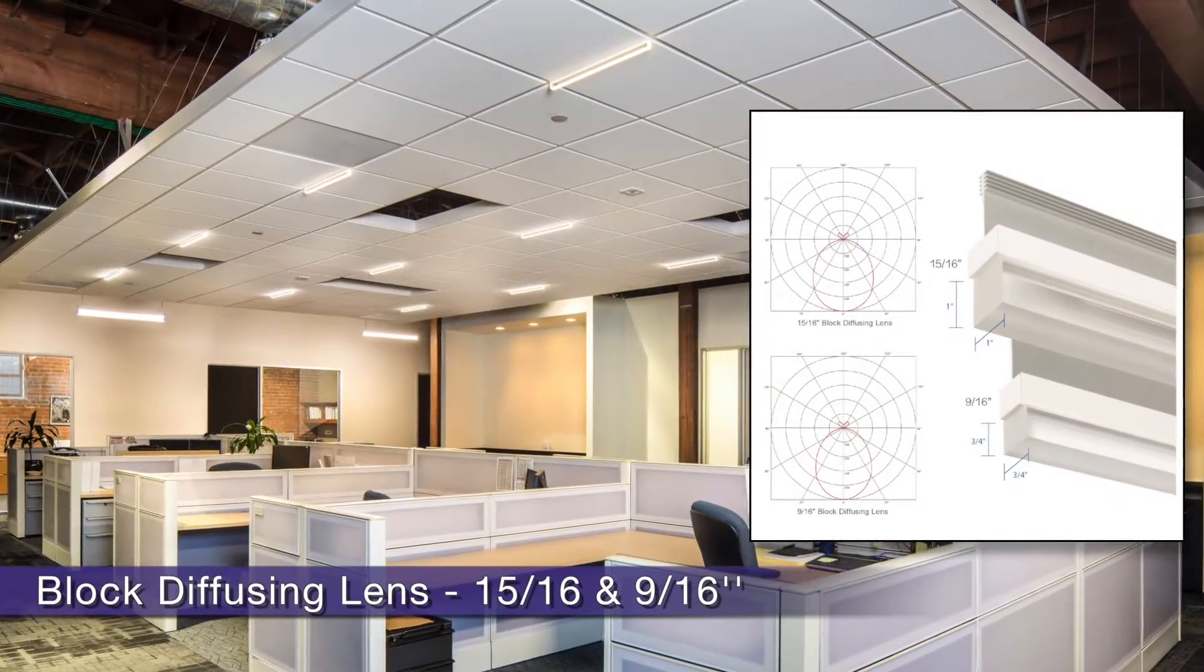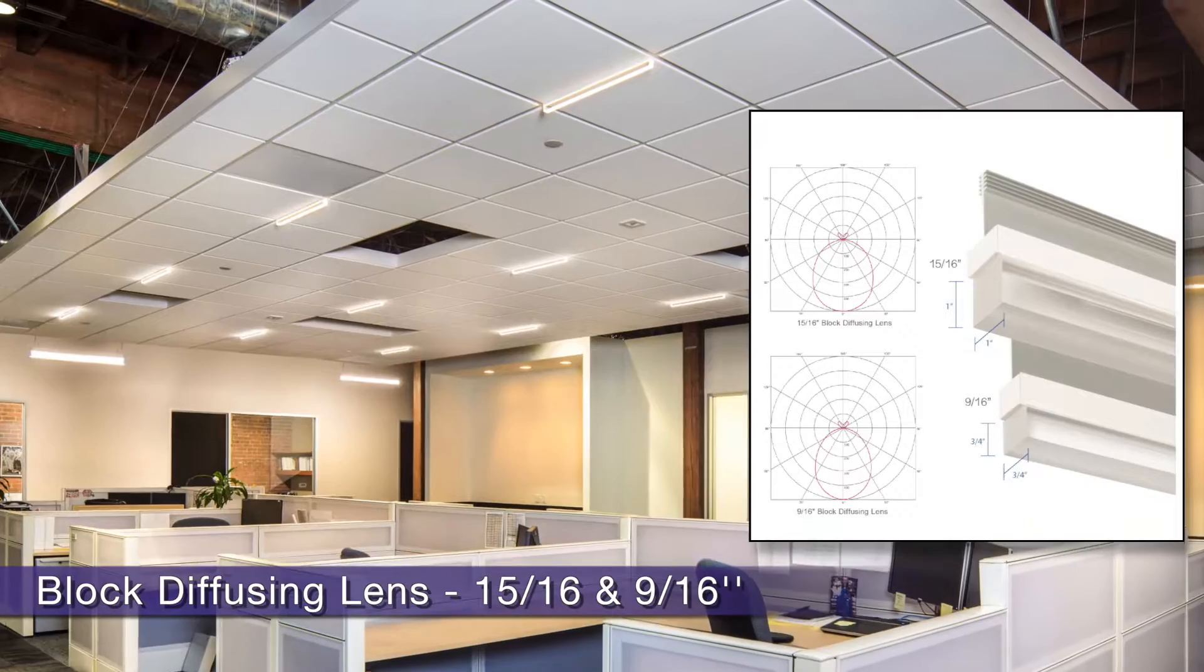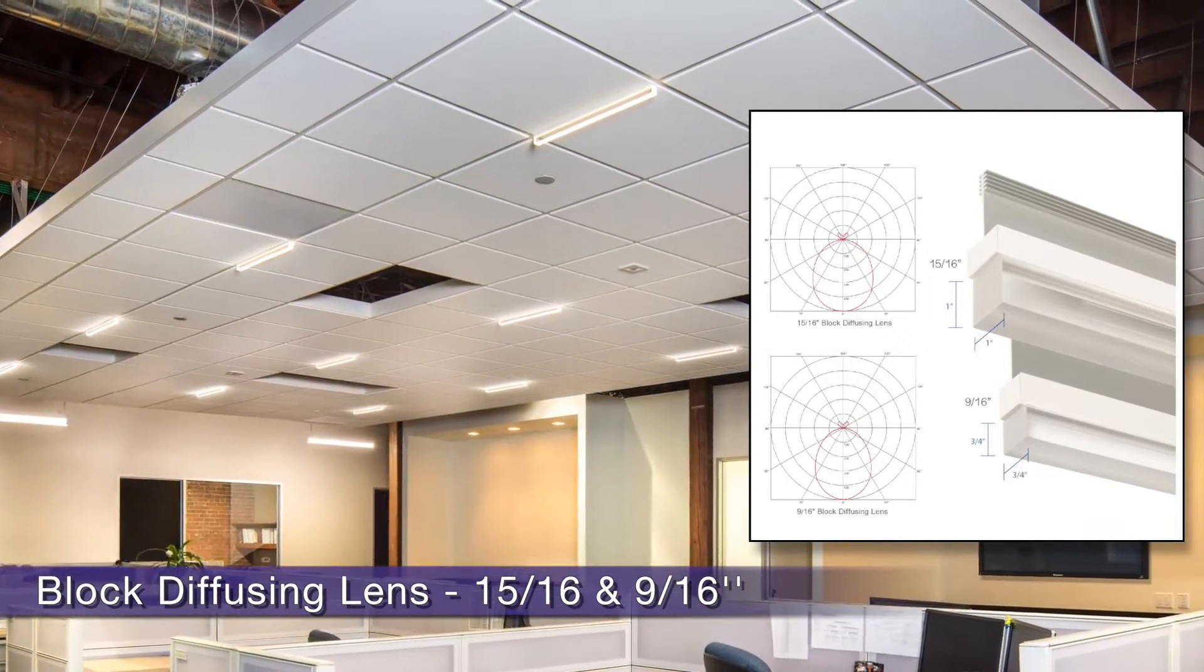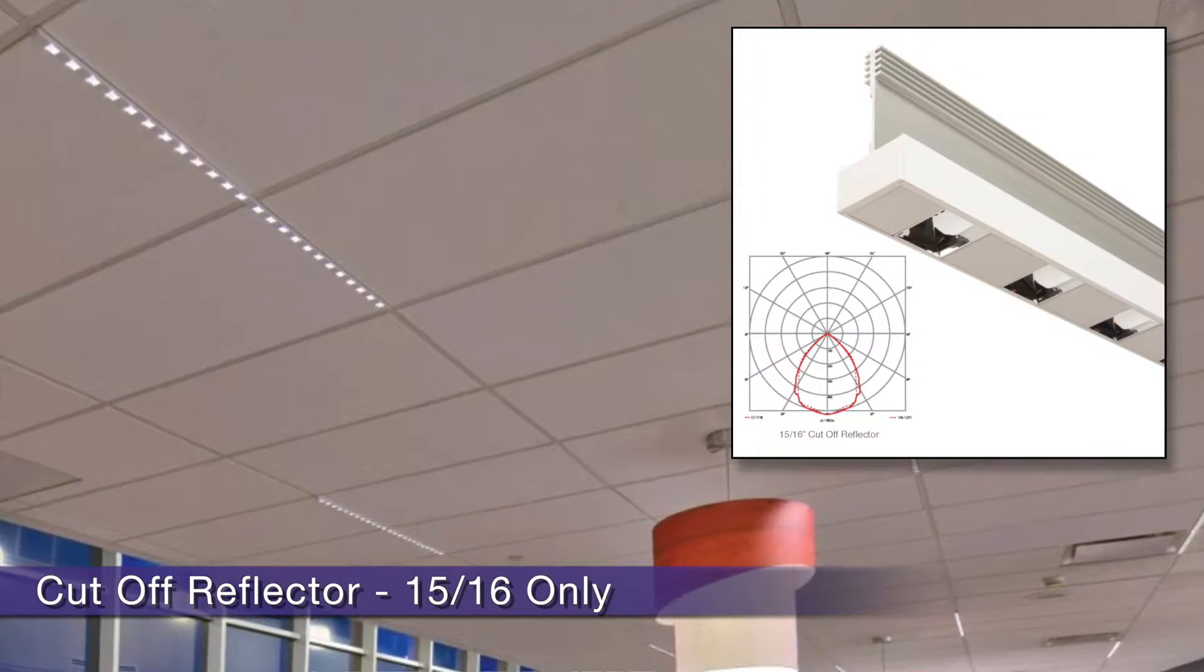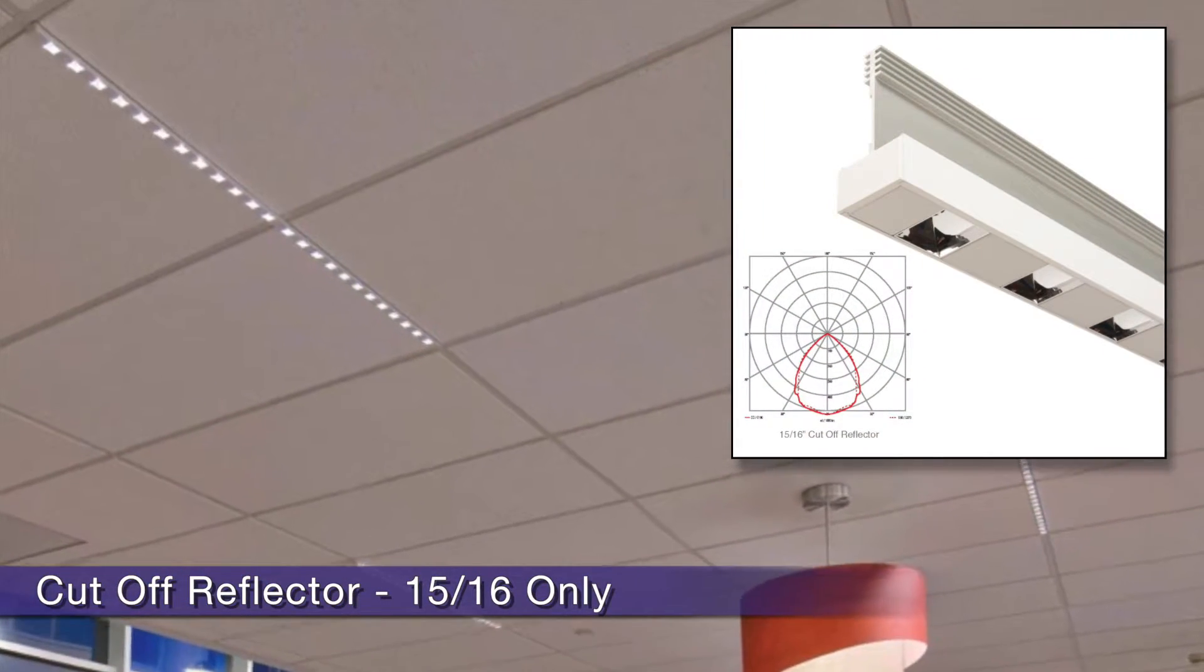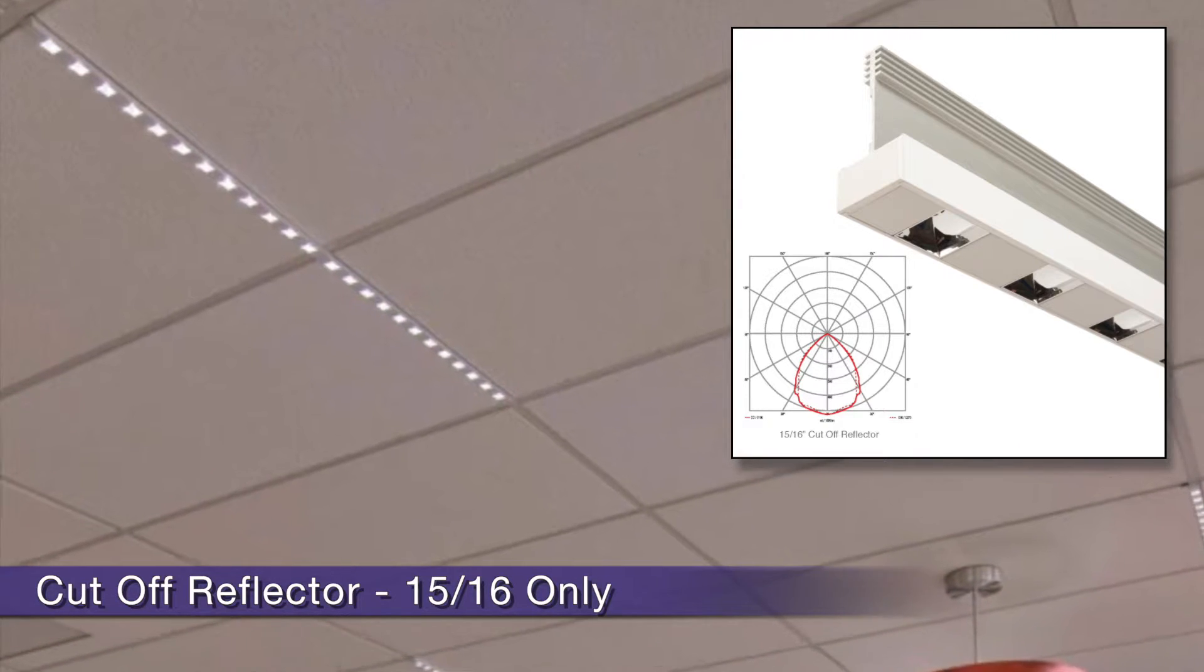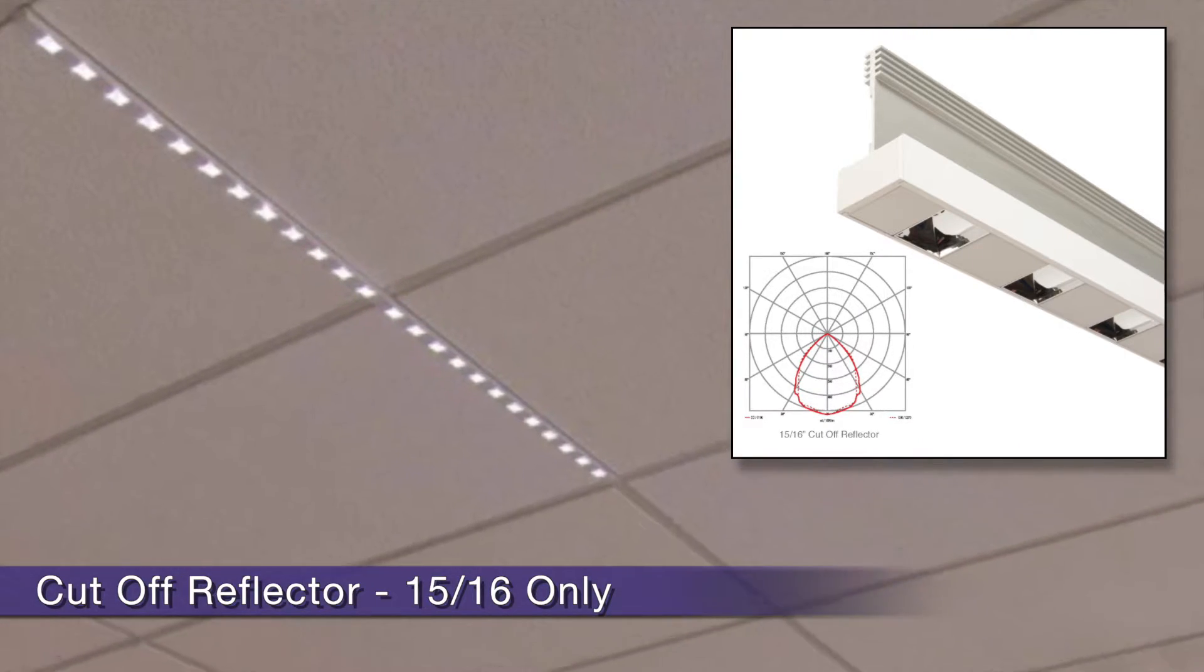The block diffuser T is designed with satin edges and clear sides to enlarge the lumen spread over an entire space. The cutoff reflector T equipped with a full cutoff reflector over each LED emits zero reflectance glare from the ceiling.